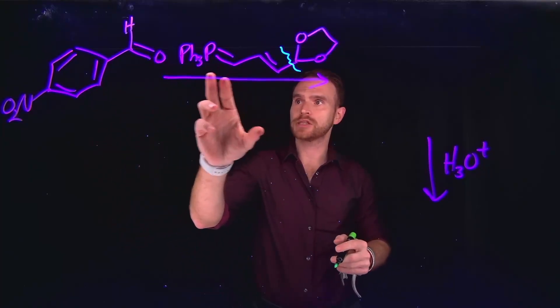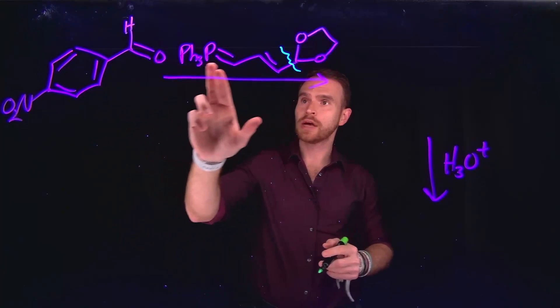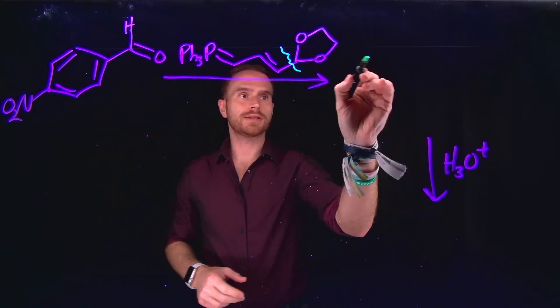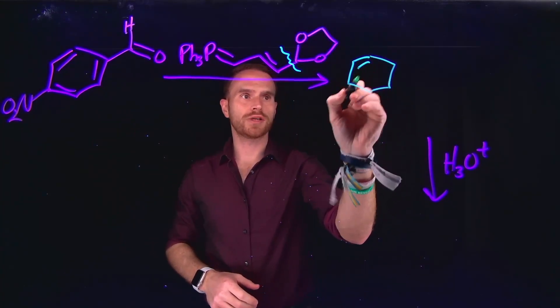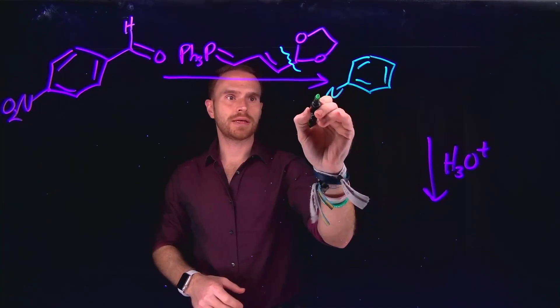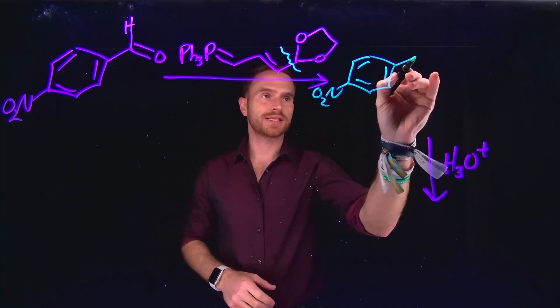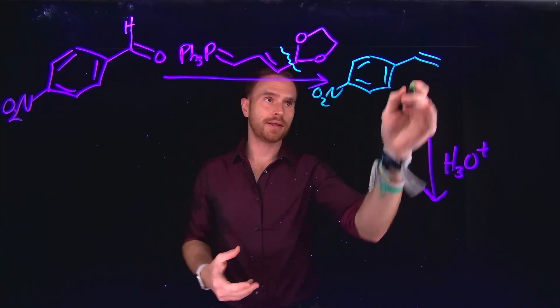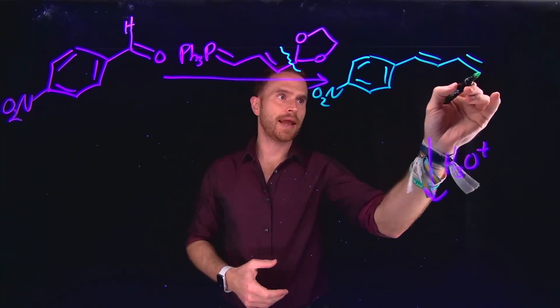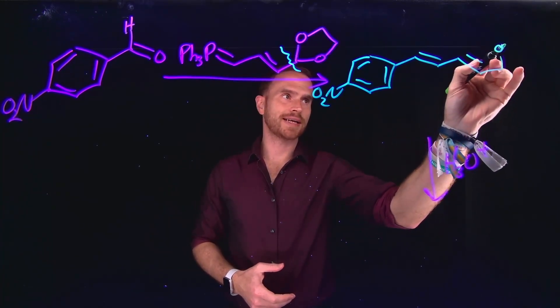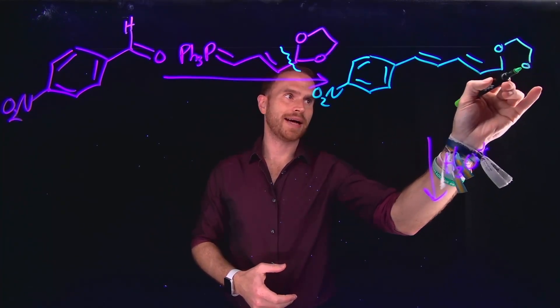So I know that Wittig reagents allow us to turn carbonyl groups into alkenes, which means that I can basically just redraw this molecule, replace the carbonyl group with instead this new alkene that came from our Wittig reagent, and everything else should basically look the exact same, where I'm still left with my acetal.